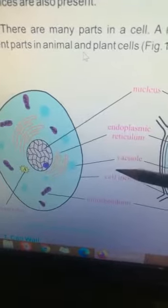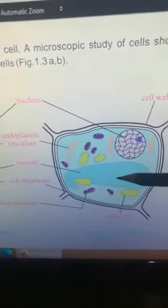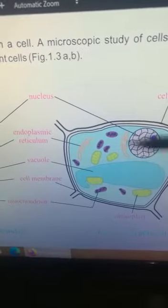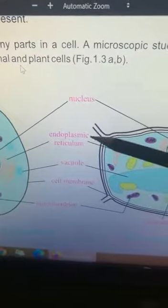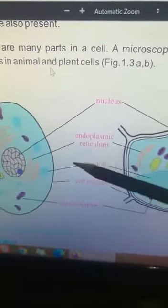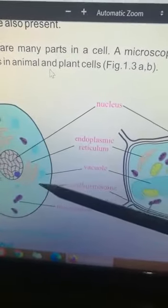As you can see, in plant cells vacuole is very small, and in animal cells vacuole takes a large volume - its size is big. Here is an endoplasmic reticulum. Endoplasmic reticulum is also present in both animal and plant cells.